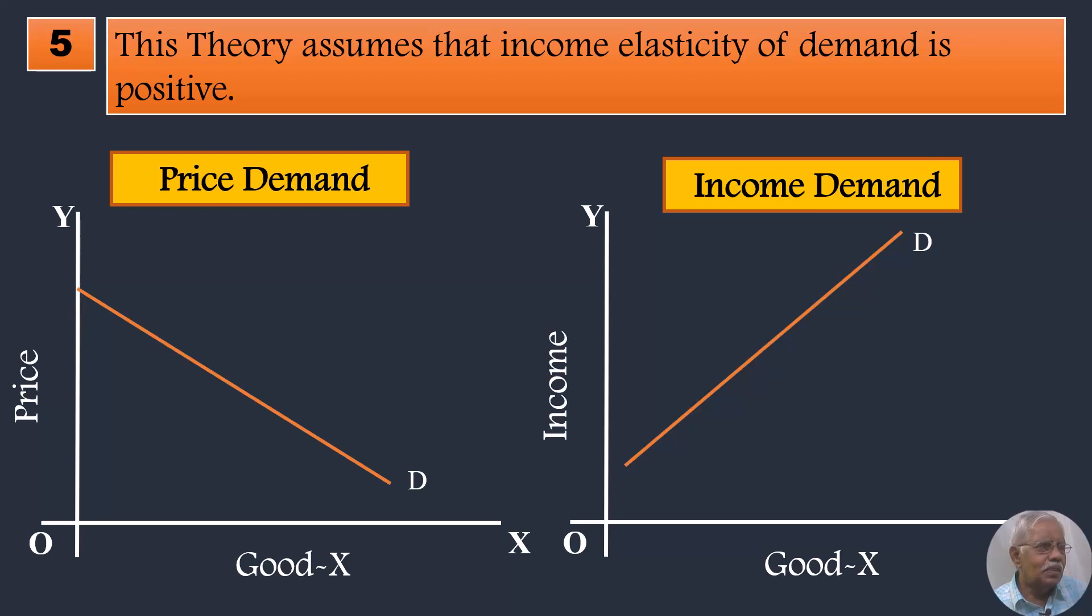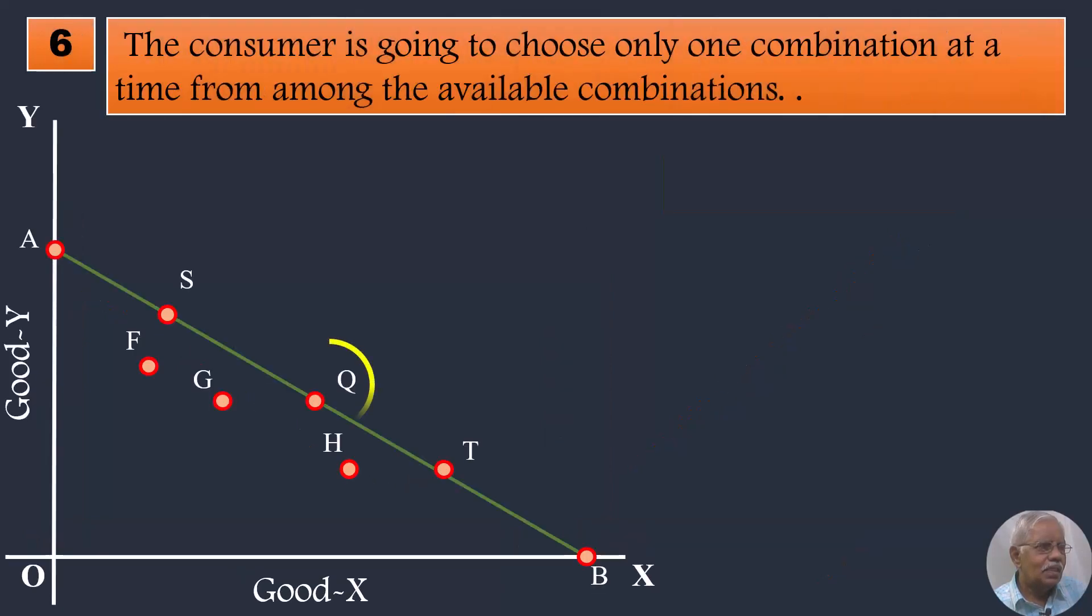Then implicit assumptions. The consumer is going to choose only one combination at a time from among the available combinations.